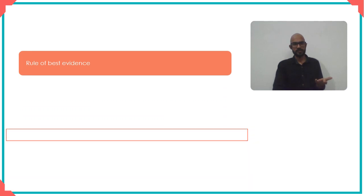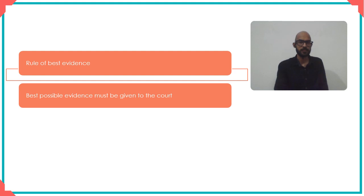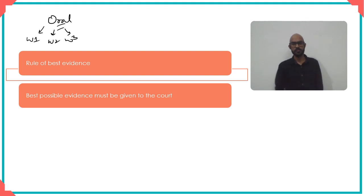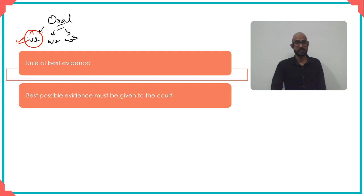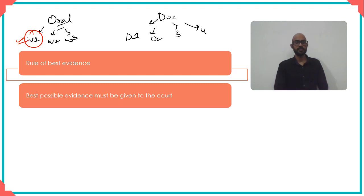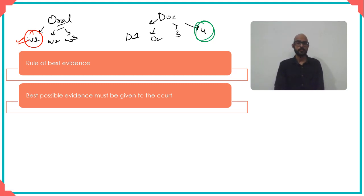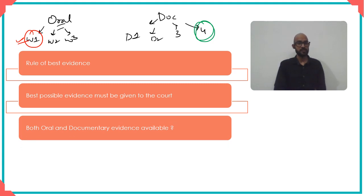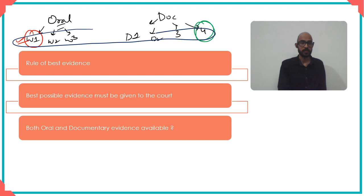According to the rule of best evidence, we choose the best that must be given to the court. If we have witness number one, two, and three, we pick the best — say witness number one was the closest. Likewise, if we have document number one, two, three, four, we choose the best — say document number four. The next question is: if both oral and documentary evidence are available — W1, W2, W3 as well as D1, D2, D4 — how do you choose the best and compare them?